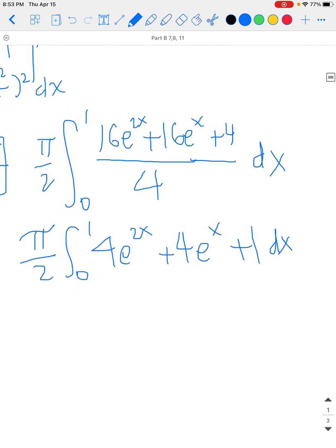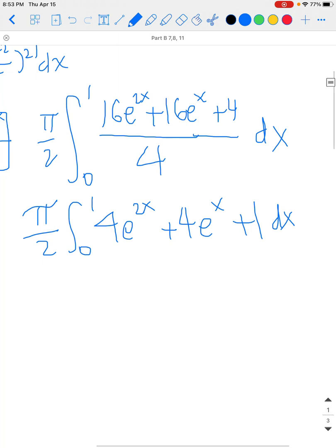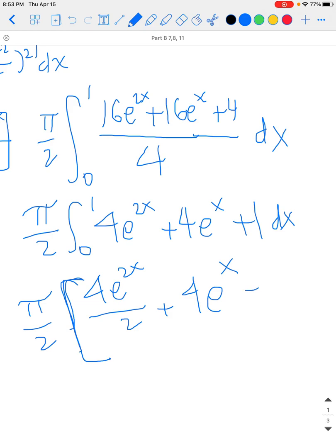Let's integrate all this, and then we'll plug in 0 and 1. So you have π/2 times—we're integrating, so we're going to use brackets. If you integrate that, you know you're going to divide by 2. What you're going to end up with is 4e^(2x)/2 + 4e^x, and the antiderivative of 1 is just x. We're evaluating this from 0 to 1.